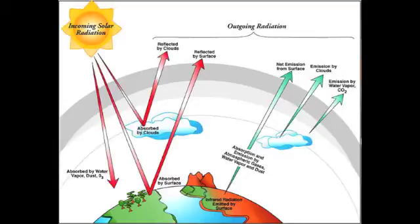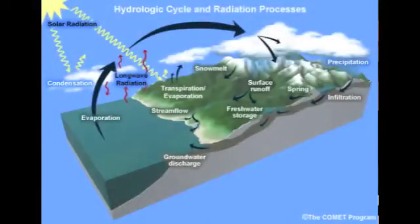Clouds both reflect incoming sunlight and inhibit the radiation of heat from the surface, thereby affecting both sides of the global energy balance equation. Clouds also produce precipitation from water vapor, releasing heat into the atmosphere in the process.